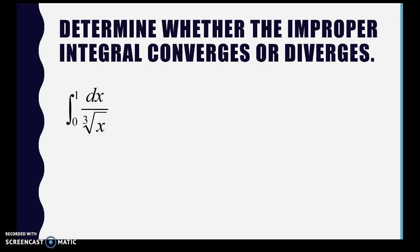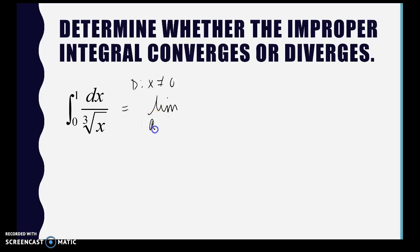All right, determine whether the improper integral converges or diverges. Looking at this function, the domain restriction is that x cannot equal 0, and 0 is one of the bounds of integration. So we set up the limit as a approaches 0 from the right, because we're going from 0 to 1, of x to the negative one-third dx, from a to 1.